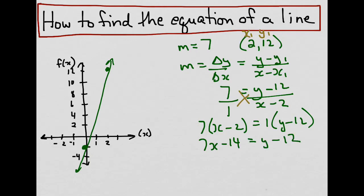And then we want to isolate the y variable. So I would move the negative 12 to the other side. So I get 7x minus 14, and as I move it across the equal sign, it changes its sign, plus 12 equals y, which leaves us with y equals 7x minus 2.